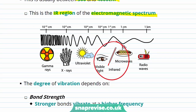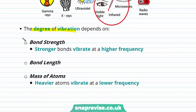The degree of variation depends on a number of factors. These include bond strength, where stronger bonds vibrate at a higher frequency, bond length, and the mass of the atoms involved in the compound or molecule, where heavier atoms vibrate at a lower frequency.